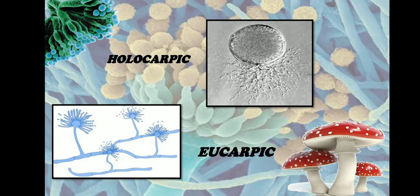In some lower fungi, the thallus is more or less a spherical single-cell structure. This complete cell sometimes acts as a vegetative cell, and when conditions are favorable it will completely turn into a reproductive cell.